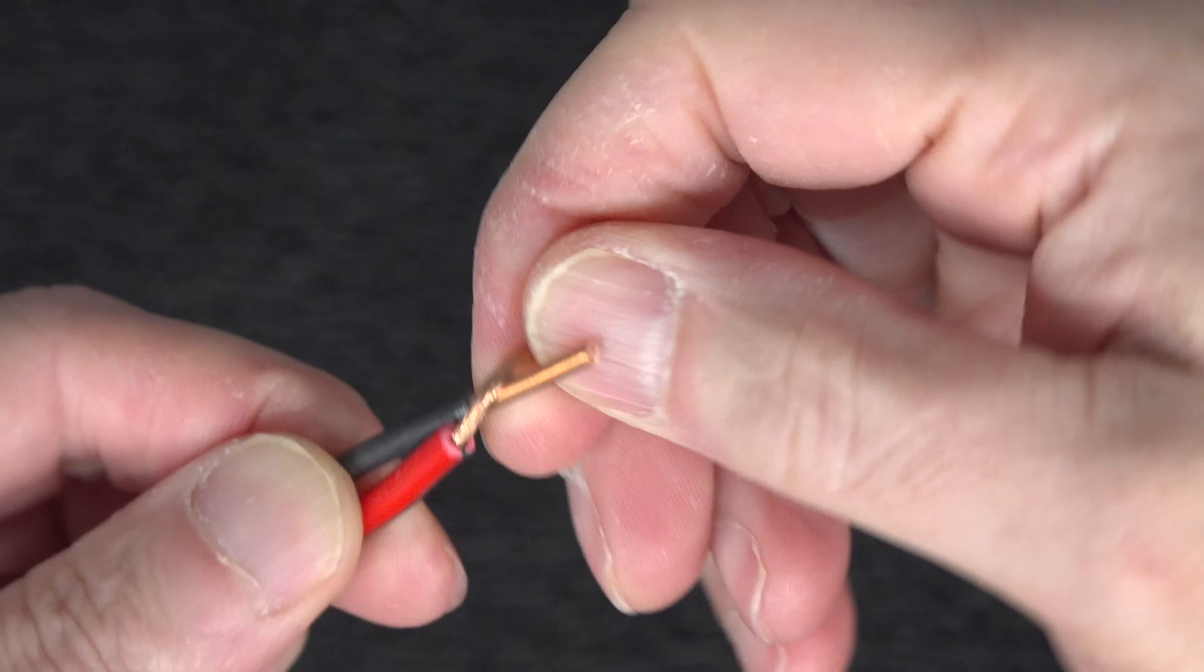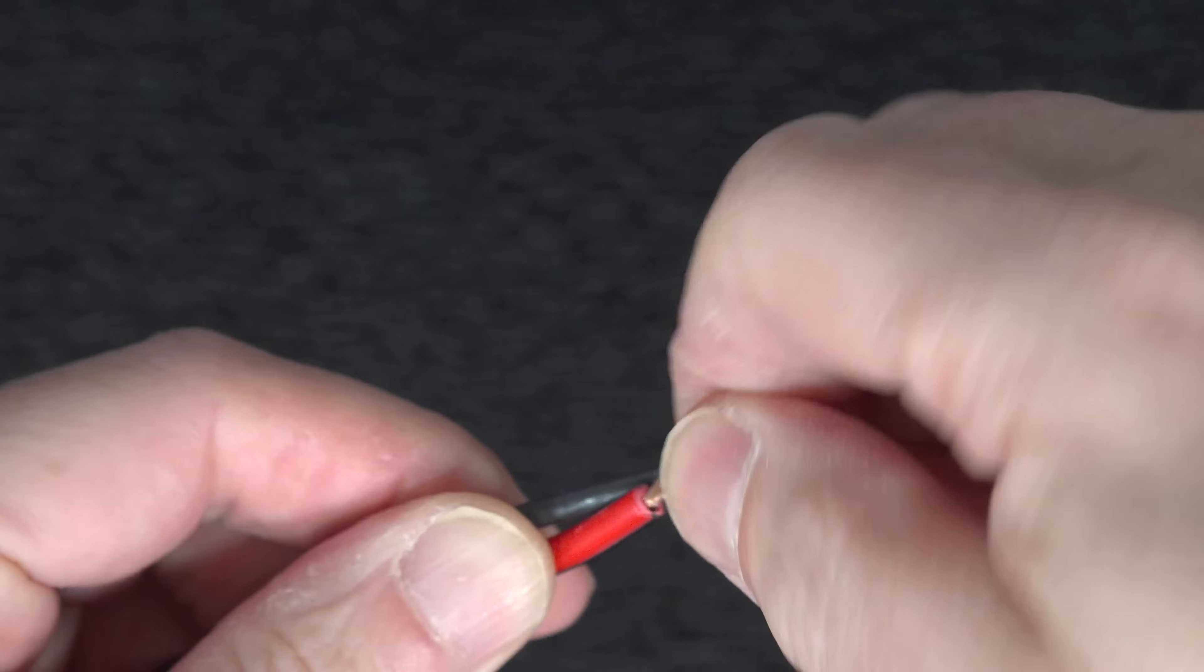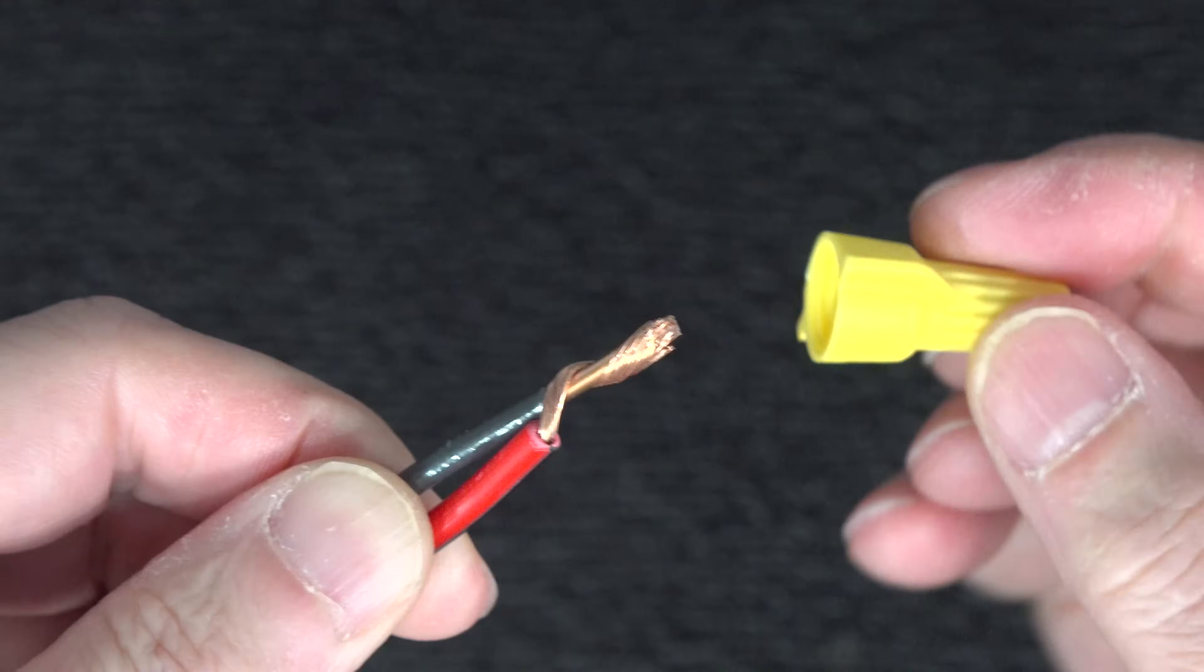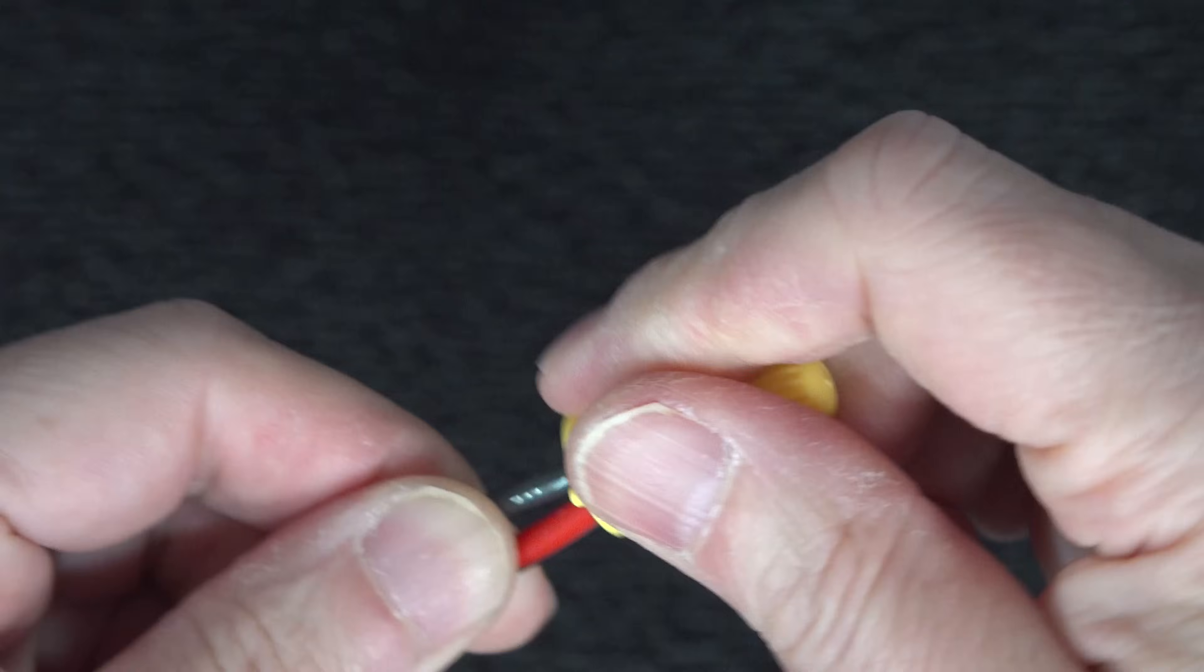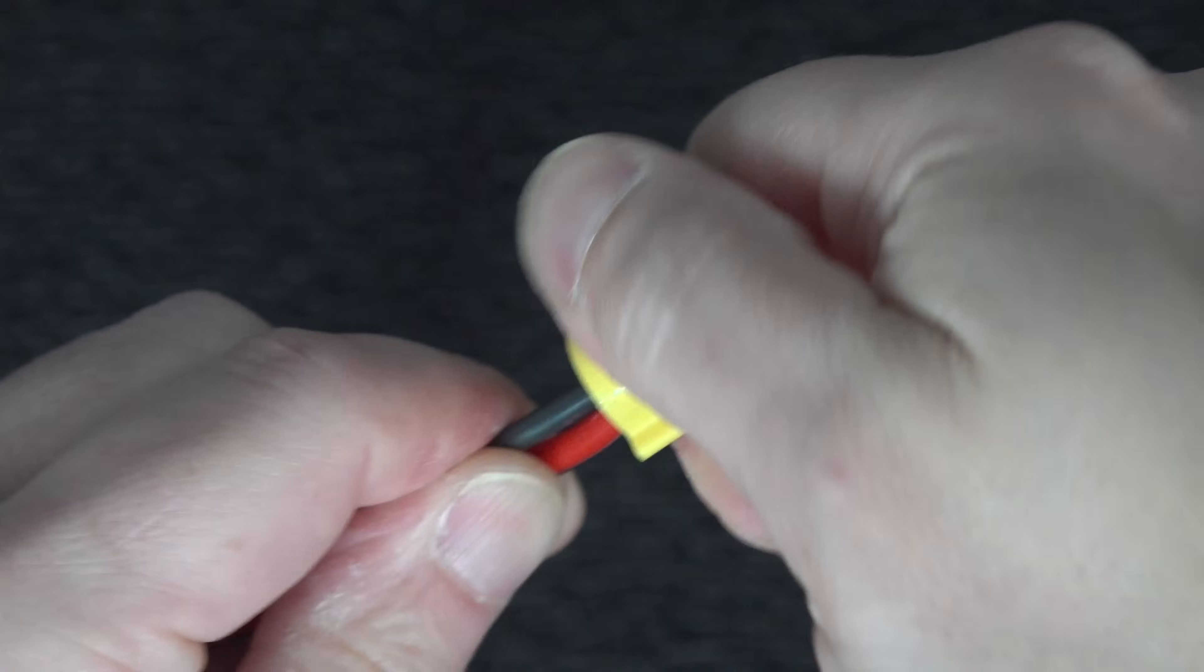Now keep the ends of the insulation even and wrap that stranded wire around the solid conductor. Then put your wire nut on top and twist it up tightly, and you might think you're done with this job, but there's still one problem.